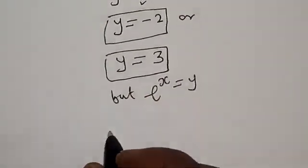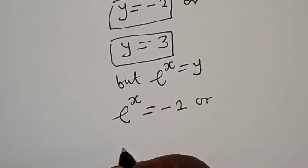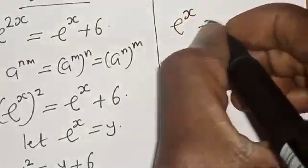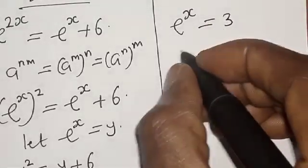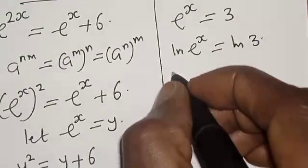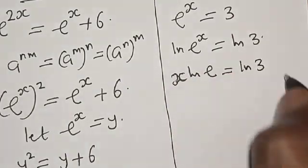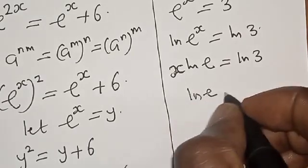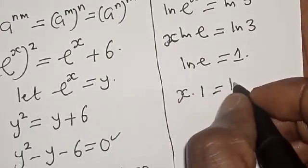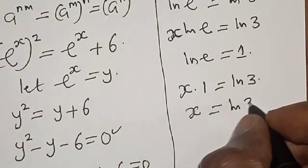Recalling that e raised to power s equals y, we have e raised to power s equals 3. Taking the natural log of both sides, we get the natural log of e raised to power s equals the natural log of 3, which gives s times natural log of e equals natural log of 3. Since natural log of e equals 1, we get s equals natural log of 3.